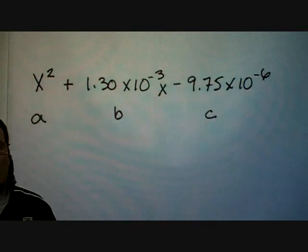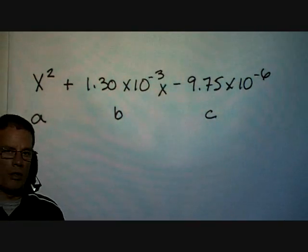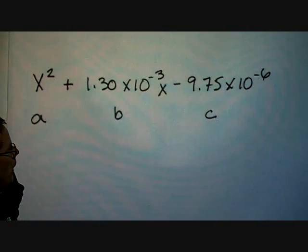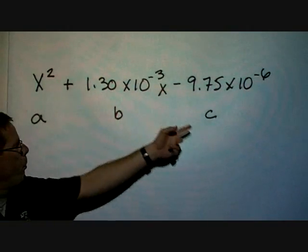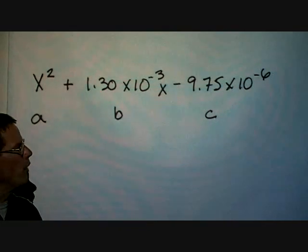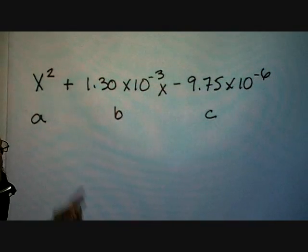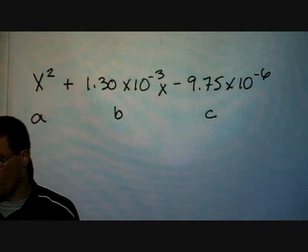You can still input these values into the quadratic equation and solve, but this calculator, the Casio, is able to process all of these values for you and calculate X. Here's A, here's B, and here's C.